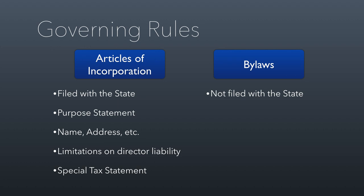Even though bylaws are not filed with the state, they are still legally enforceable — meaning that in a lawsuit, the bylaws could determine who wins. These are an internal set of rules determined by the board of directors. For a regular corporation, bylaws must also be approved by the shareholders; for a membership nonprofit, by the members. The board of directors really guides what's in the bylaws, including how often board meetings must be held and how many board members there can be.